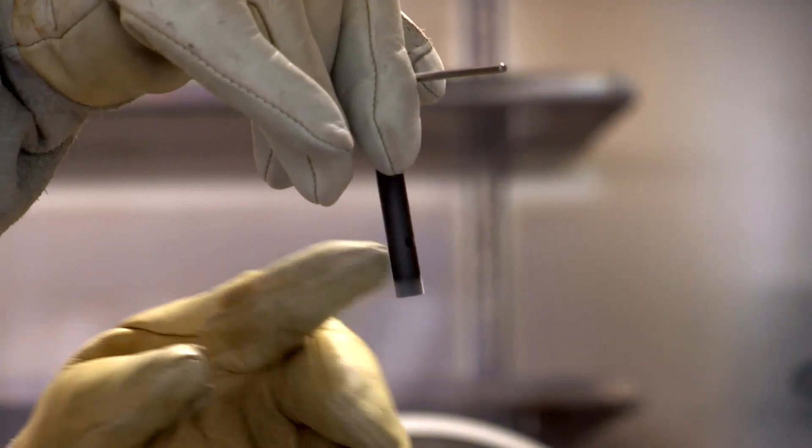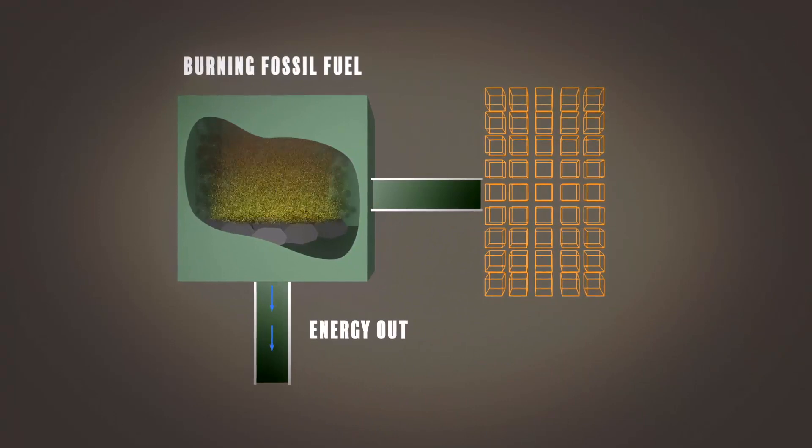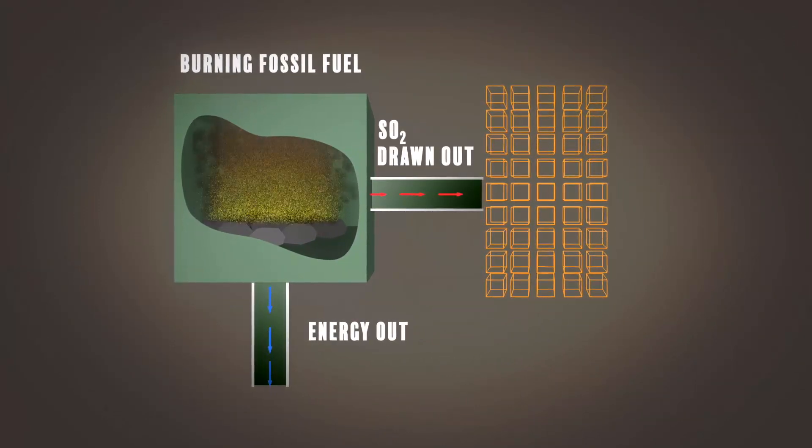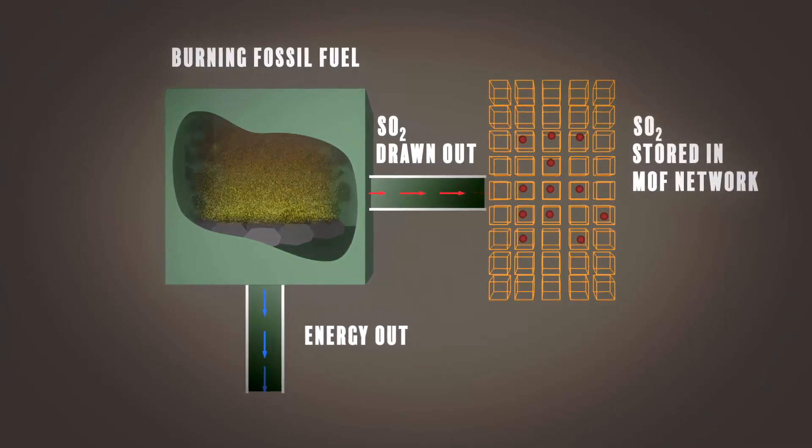At the moment this is using non-regenerable processes, so we are designing materials that will be regenerable and therefore we can capture the SO2 and hopefully be able to release it again for further processing to be able to use it for useful things such as elemental sulphur or liquid SO2 or sulphuric acid for use in industry.